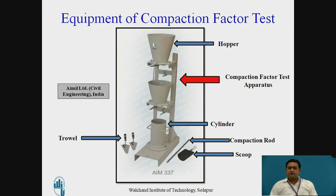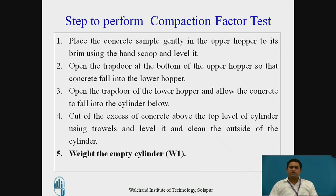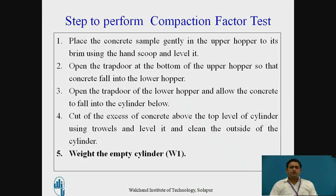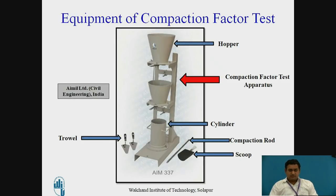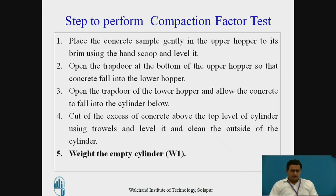Now let's see the sequence to carry out the compaction factor test. Place the concrete sample gently in the upper hopper to its brim using the hand scoop and level it. After that, open the trap door at the bottom of the upper hopper so that the concrete falls into the lower hopper by gravitational force. Then open the trap door of the lower hopper and allow the concrete to fall into the cylinder below. These are the first hopper, second hopper, and the cylinder. Cut off the excess concrete above the top level of the cylinder using the trowel or level it by the tamping rod, and clean the excess concrete which fell down.